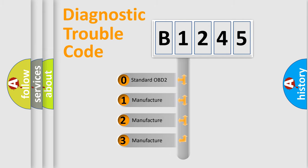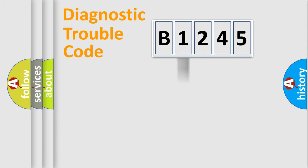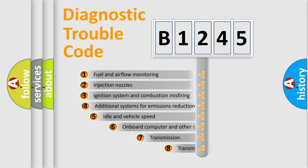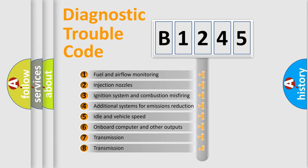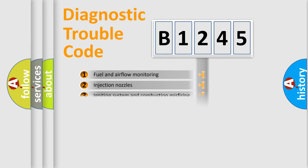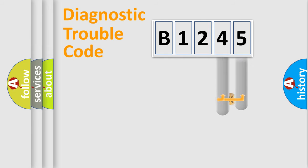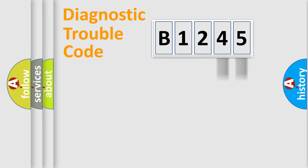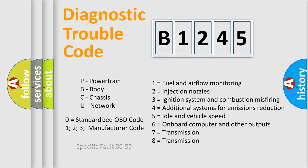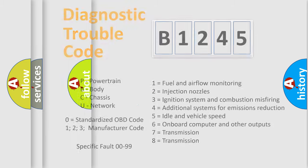If the second character is expressed as zero, it is a standardized error. In the case of numbers 1, 2, or 3, it is a more manufacturer-specific expression of the car error. The third character specifies a subset of errors. This distribution is valid only for the standardized DTC code, and only the last two characters define the specific fault of the group.